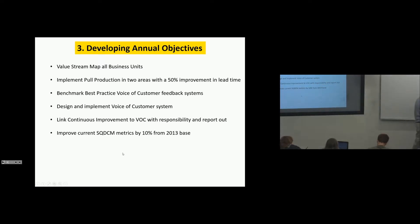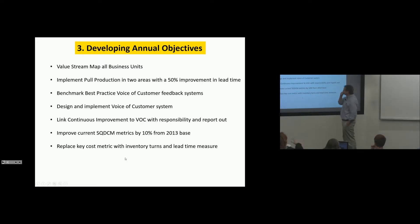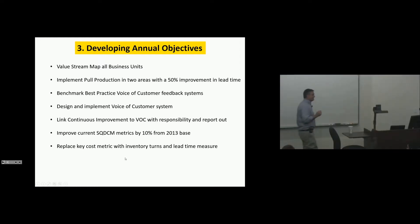So we know what our metrics are. We know what our trails are. We know what our trends are. We know what our targets are, 10% improvement. And let's manage every day to achieve these results on the floor. Replace key cost metric with inventory turns and lead time measure. So if we really want to improve lead time and want to be customer responsive, if we use inventory turns as a primary metric and lead time reduction as a primary metric, everyone's working towards that. Whip reduction. Quality improvement. Because you can't have whip reduction if you don't have stable process. So it drives great behavior.